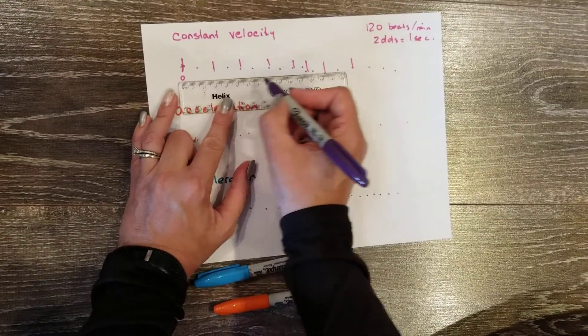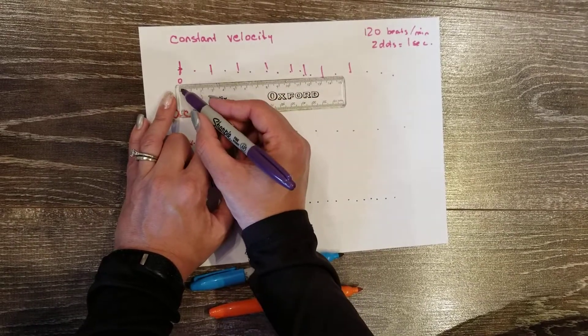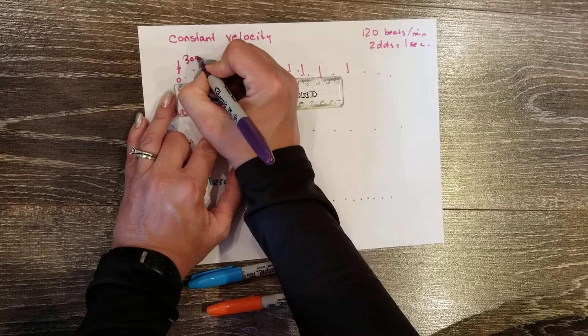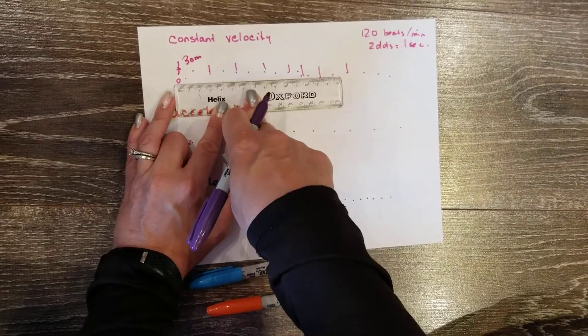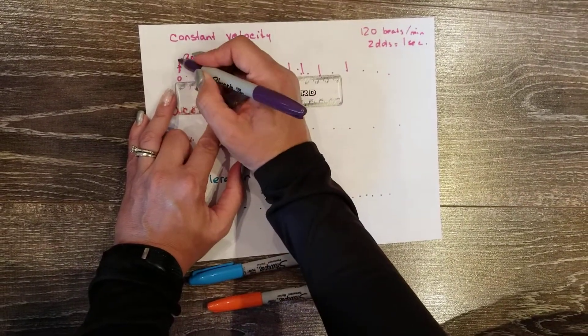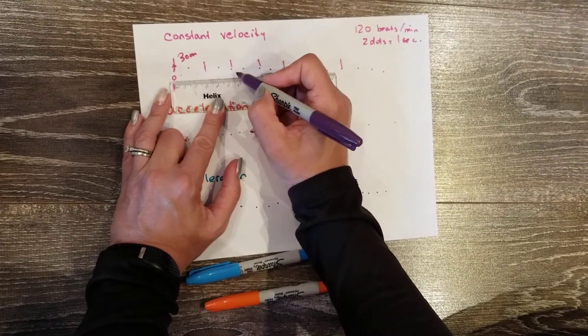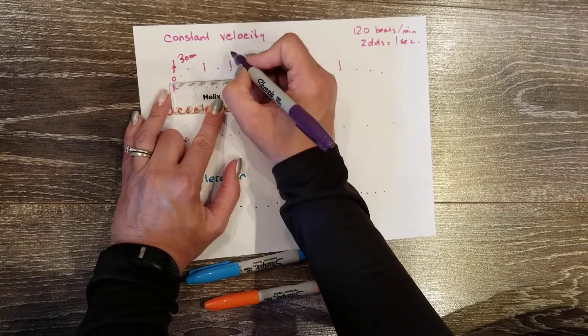For example, in my first trial, the distance between time zero and my first line was three centimeters. Leaving my ruler in the same point, because I always keep time zero at position zero, my next line is at 5.4 centimeters.